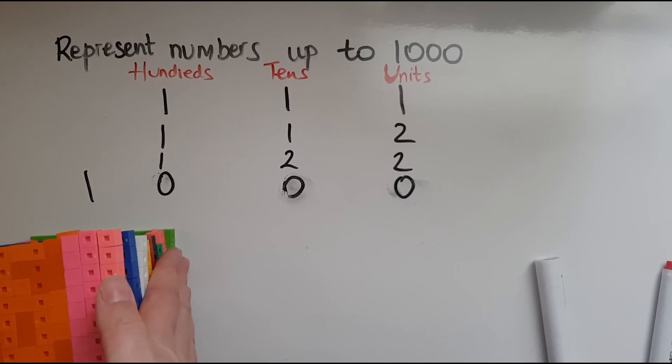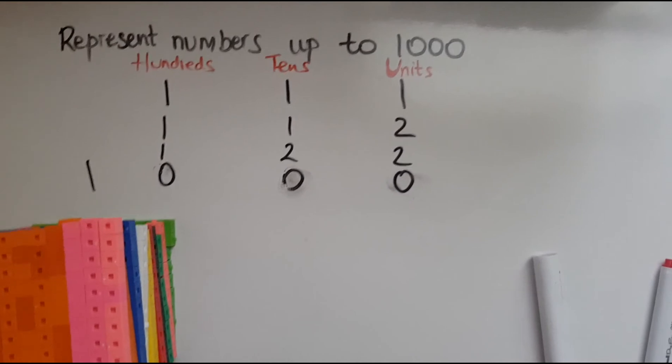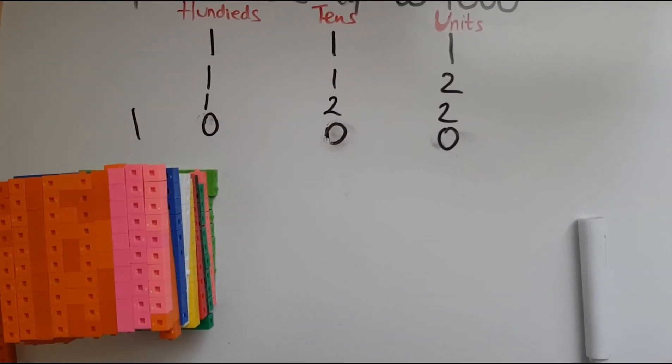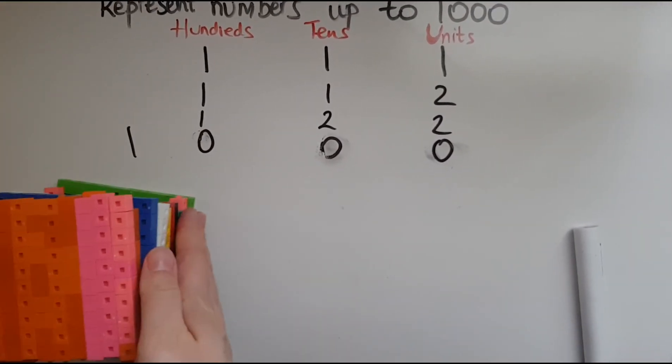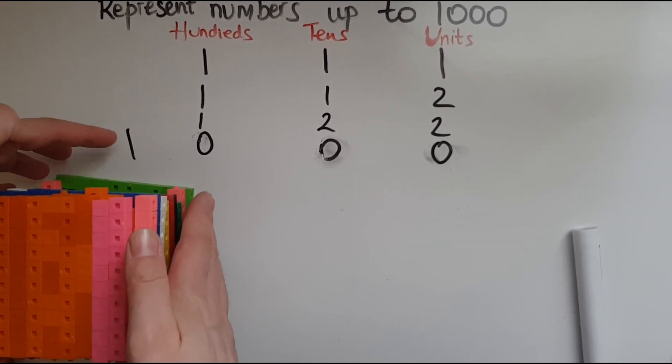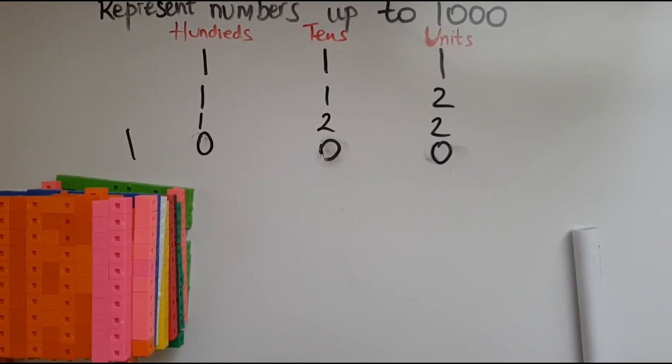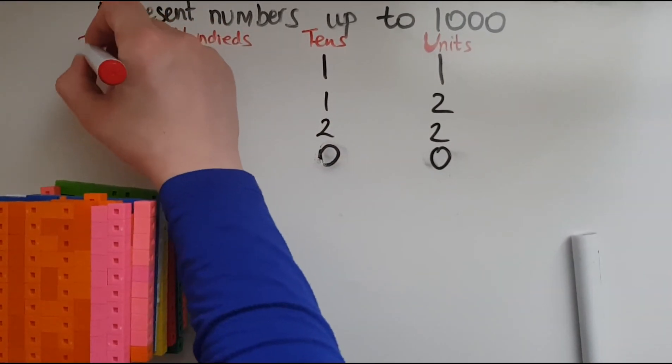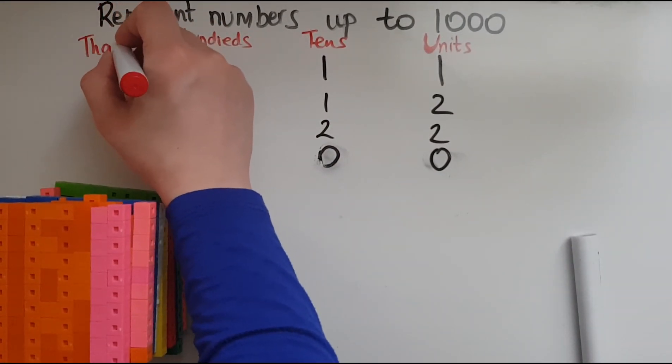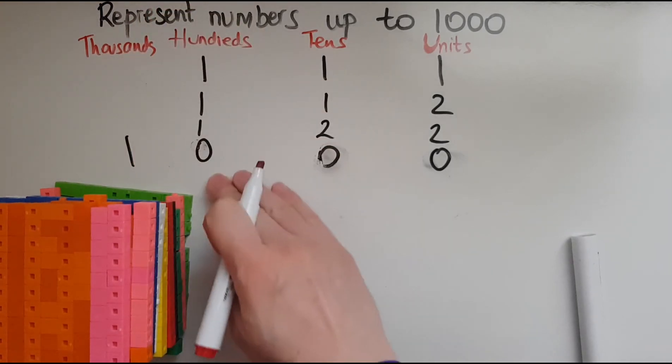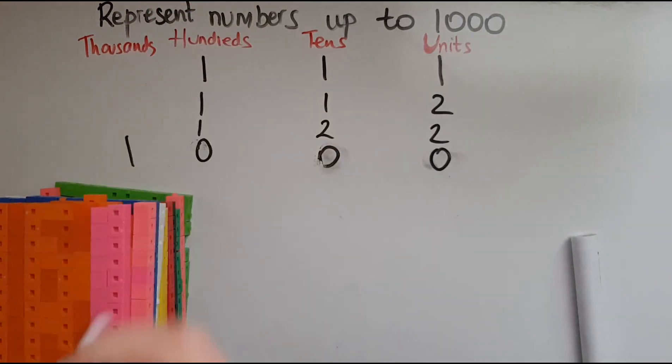So these 10 blocks of a hundred have made one thousand. So this needs to go under the thousands column. So I've created a new one which says thousands, not even hundreds because 10 of them will make a thousand. So this is how to represent numbers up to one thousand using the cubes.